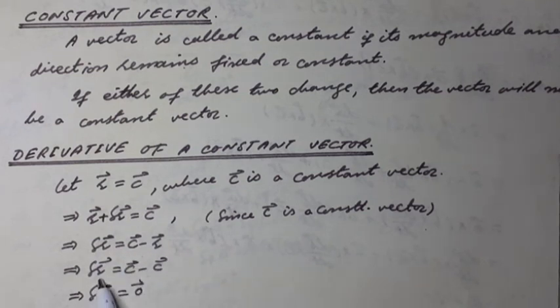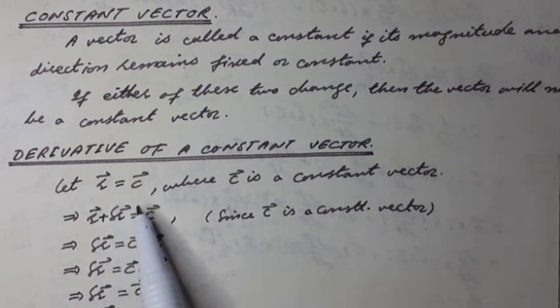And it can be written as delta R vector is equal to C vector. C vector cancel with C vector and we have delta R vector is equal to 0 vector or null vector.